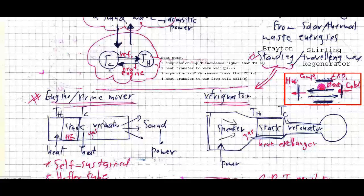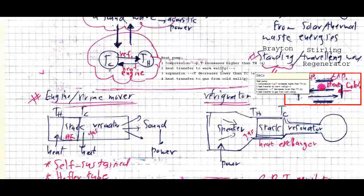We have a resonator — a device which combines left-running and right-running waves to generate a standing wave. A standing wave is a type of wave whose amplitude is only a function of position. The other version of the thermoacoustic device operates based on traveling waves.